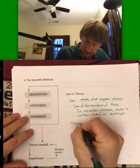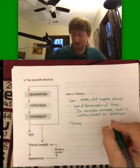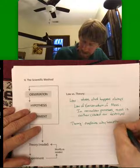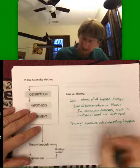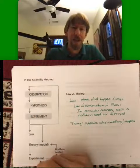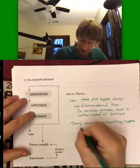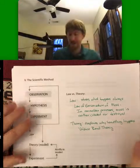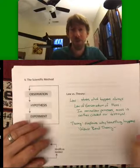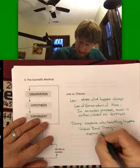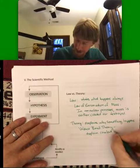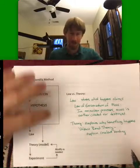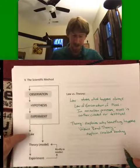Now a theory explains why something happens. And as an example of a theory we will run into it's called valence bond theory, and that will explain covalent bonding. And don't worry if you don't know these terms yet. We will. We just want to get the idea that once you do enough experiments, hypothesis, experiments, observations, you can get to laws and theories.